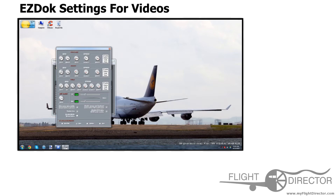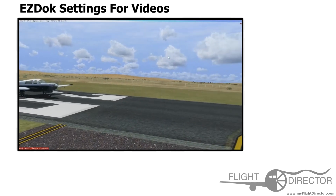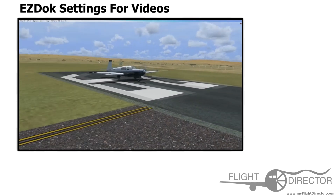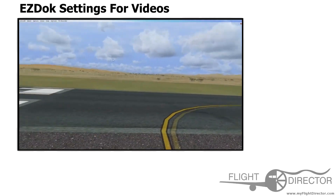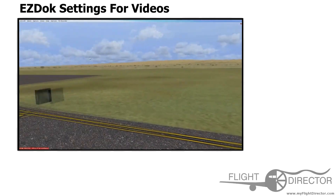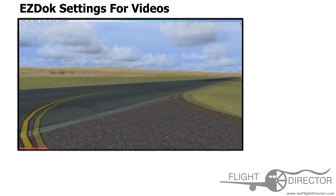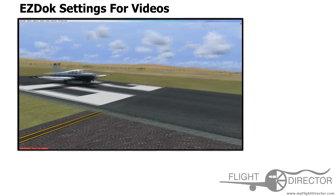Mouse speed has to do with how fast your point of view moves when you're looking around an aircraft. Let's bump that up and see what happens. Very slight mouse movements result in very large movements around the aircraft — this isn't good for videos.